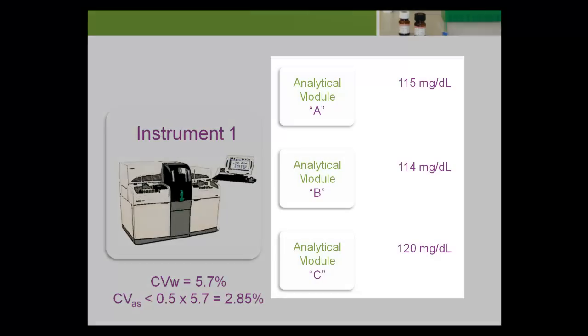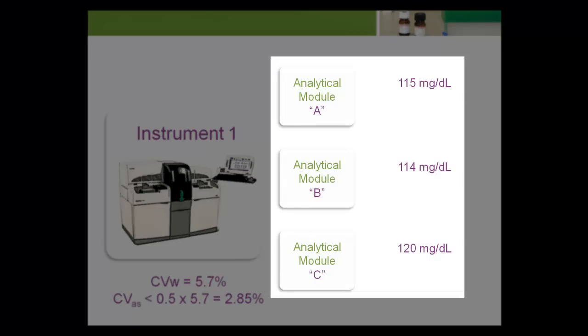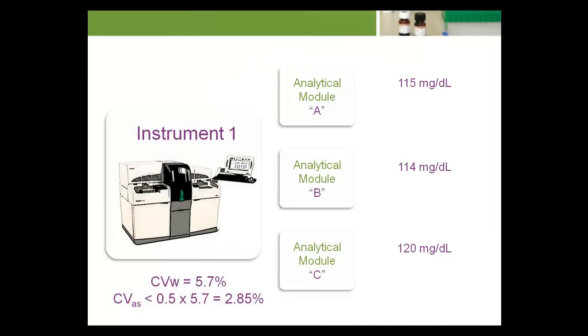Each module tests approximately one-third of the glucoses ordered on patient samples. F1 equals F2 equals F3 equals one-third. The mean glucose levels for the three modules based on repeated testing of a quality control material are 115 mg per deciliter, 114 mg per deciliter, and 120 mg per deciliter, and the standard deviations are 3.0 mg per deciliter, 3.1 mg per deciliter, and 3.1 mg per deciliter.